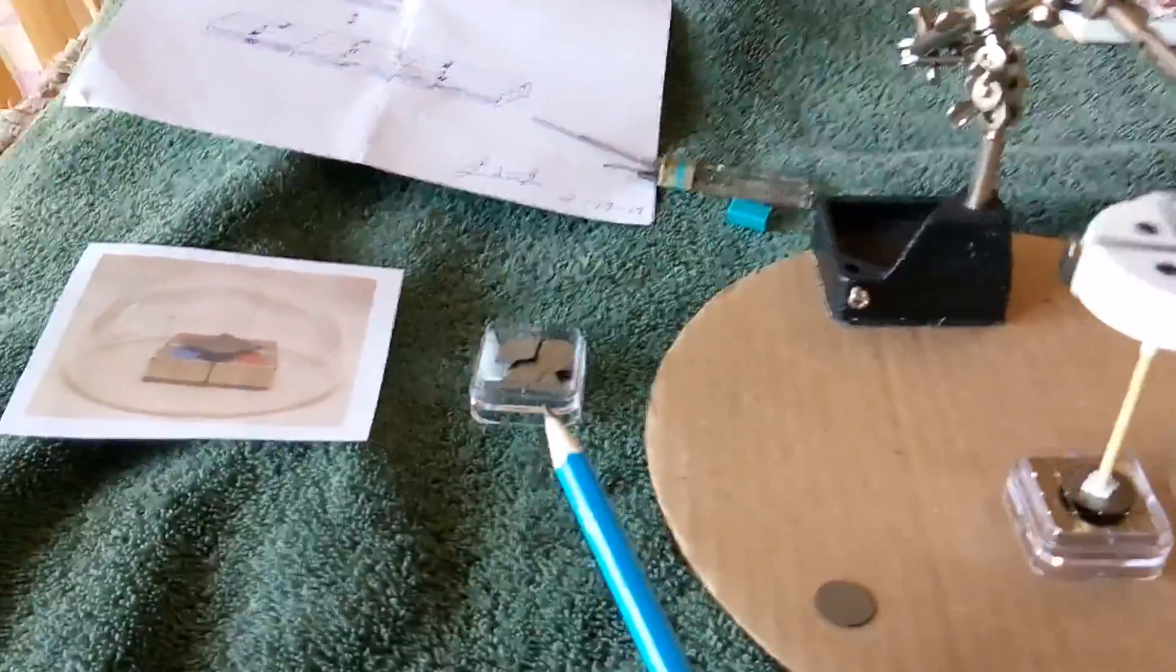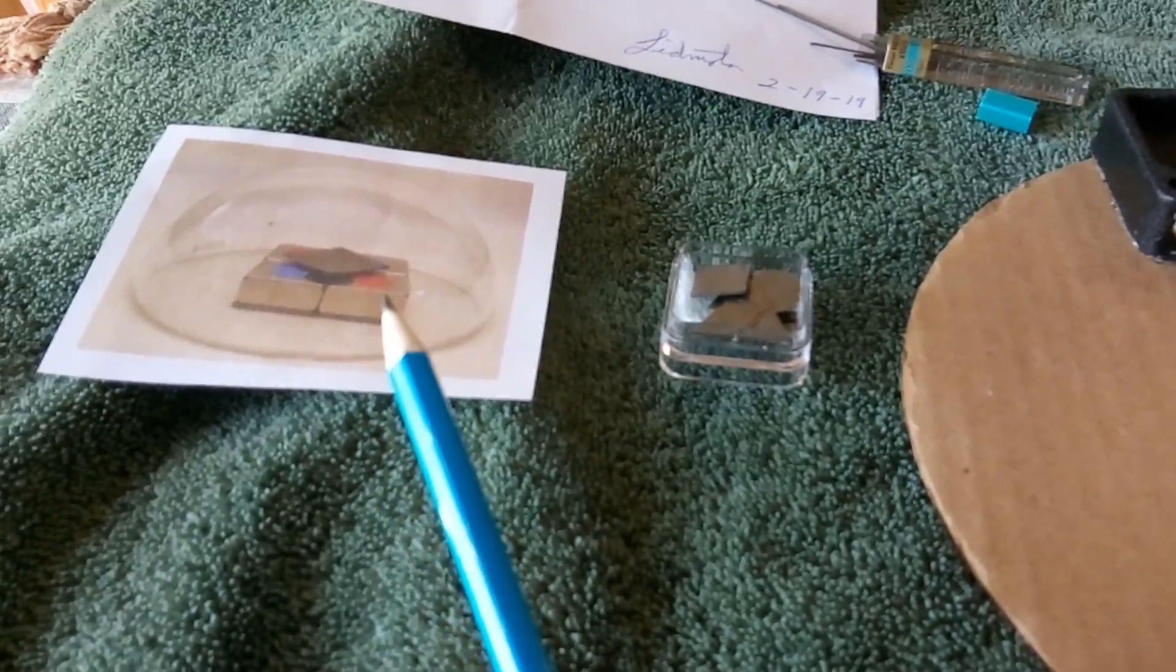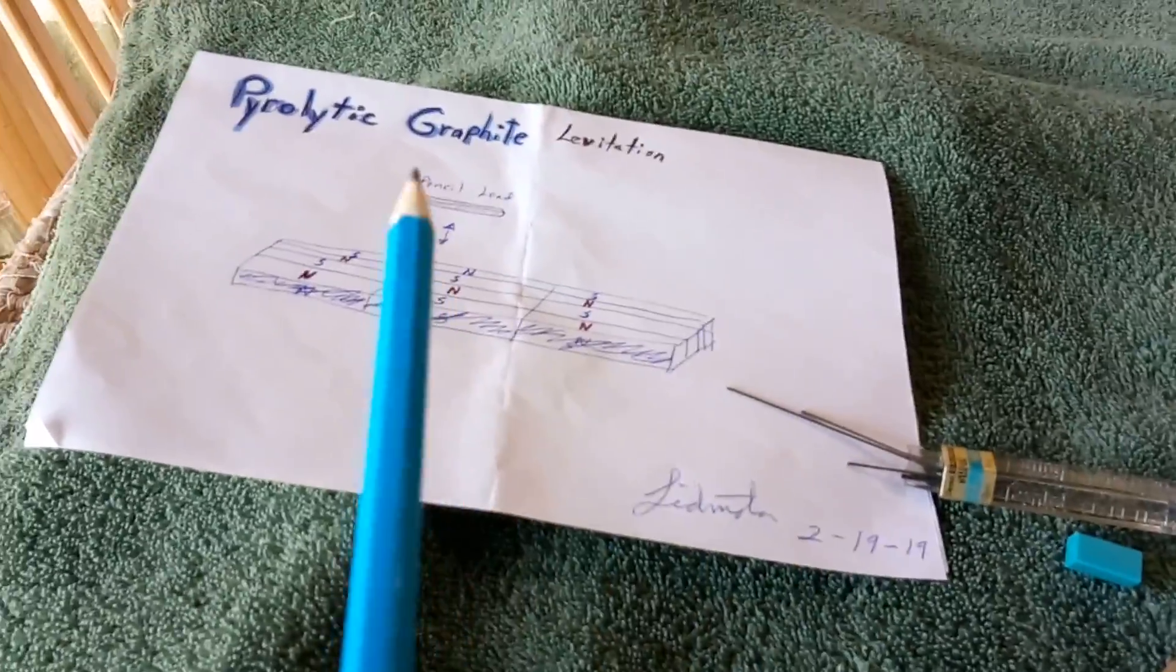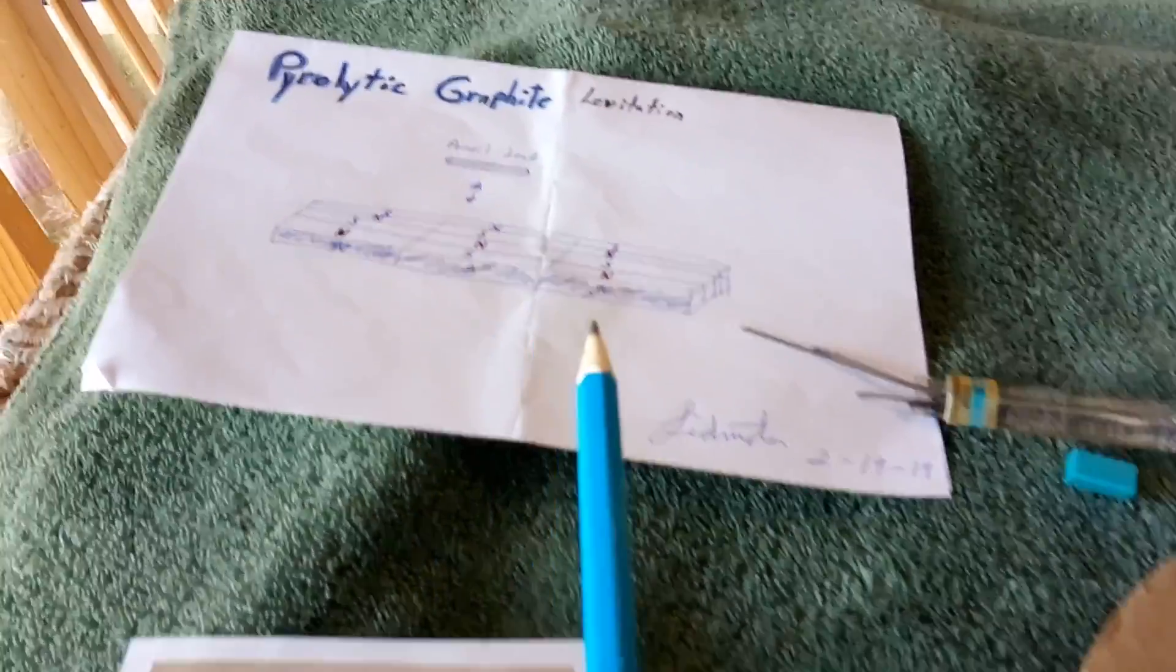I finally got my pyrolytic graphite in the mail. That's the stuff that levitates off of a permanent magnet array if you get the array just right. This is where I started with the pencil lead. If you go back in my videos, you'll see where I've been going with this. Laser Saber is the one that turned me on to this, to try to make a friction-free bearing.